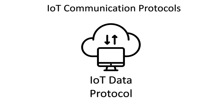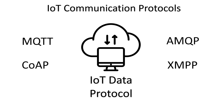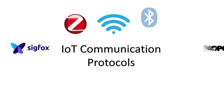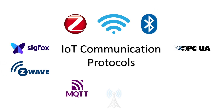IoT data protocols are designed to connect low power IoT devices. Without any internet connection, they are capable of providing end-to-end communication with the hardware. The connectivity in IoT data protocols can be done via WAN or cellular network. MQTT, CoAP, AMQP, and XMPP are some examples of popular IoT data protocols. Now I will discuss some communication protocols which are widely used in consumer and industrial IoT.